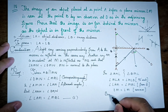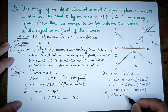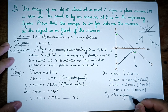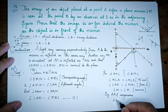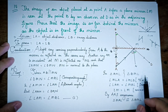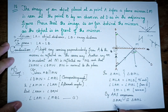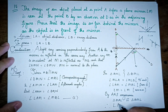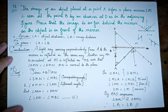By AAS congruence, triangle MAL is congruent to triangle MBL. Therefore, LA is equal to LB. This proves that the image distance equals the object distance. Exercise 7.1 is complete.